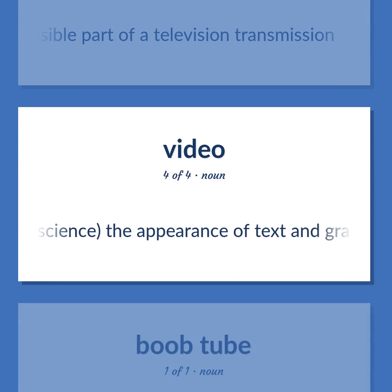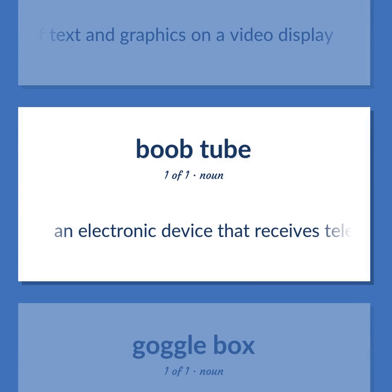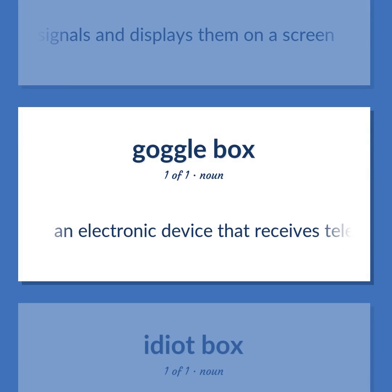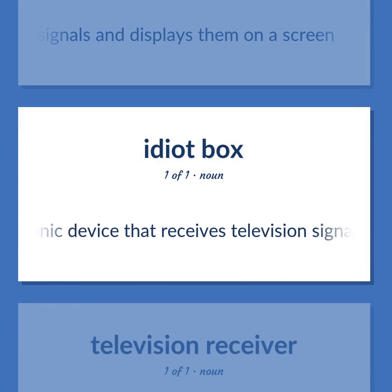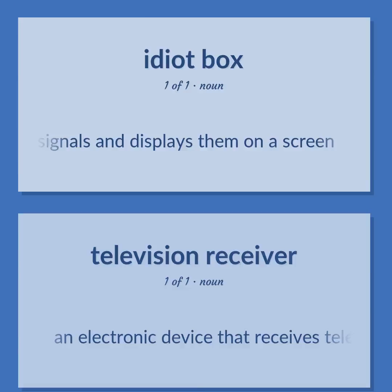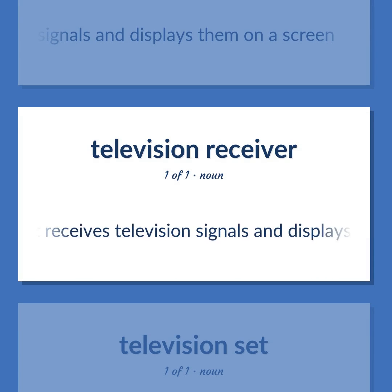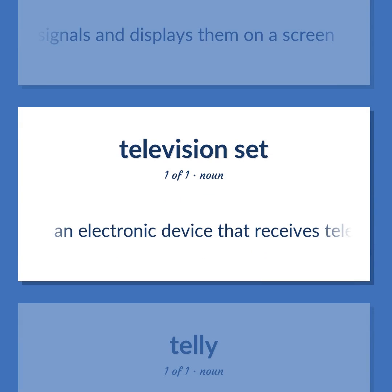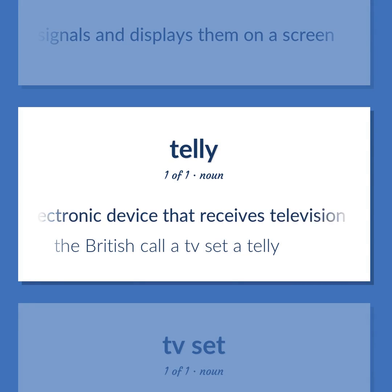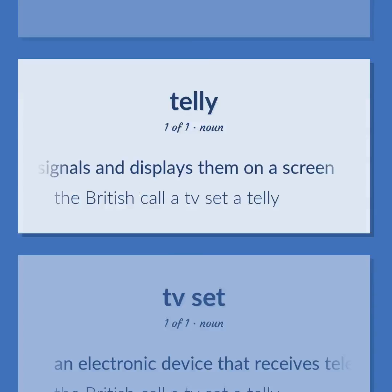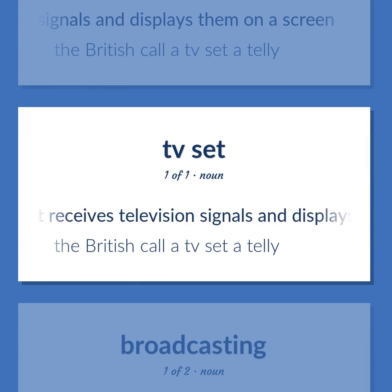Video — computer science: the appearance of text and graphics on a video display. An electronic device that receives television signals and displays them on a screen. The British call a TV set a telly.